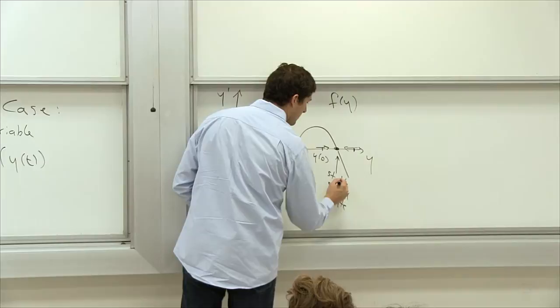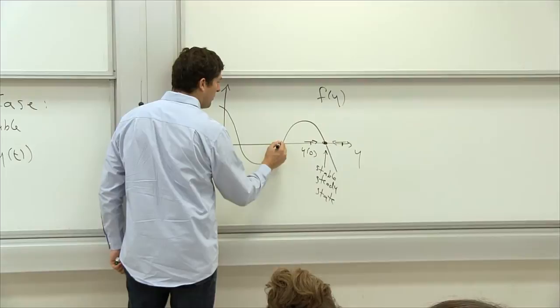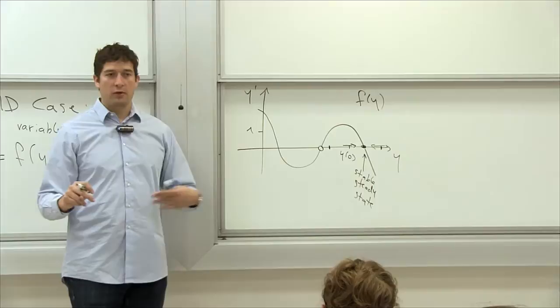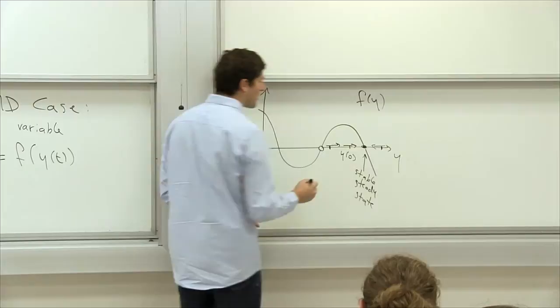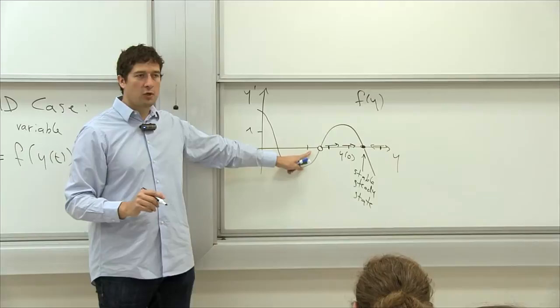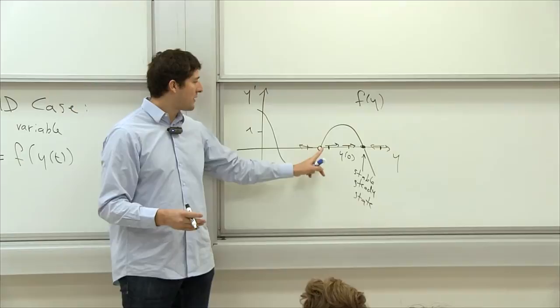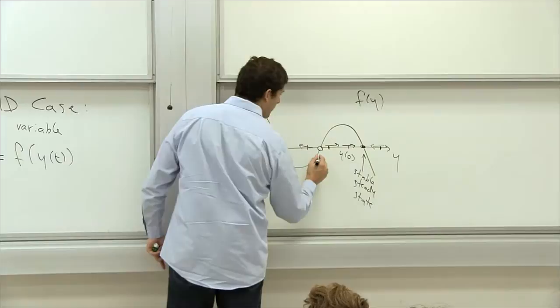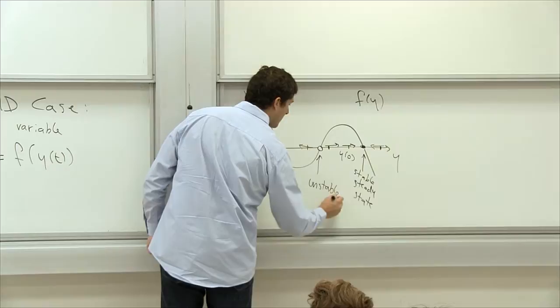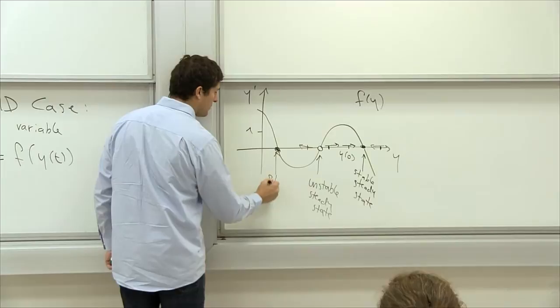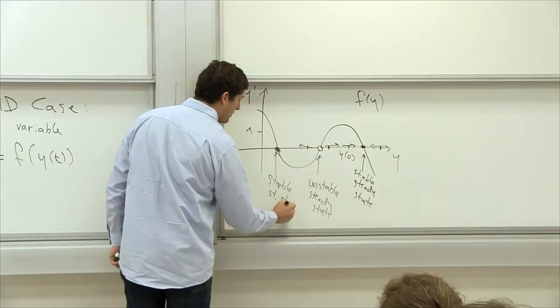Now let's think about another point where f equals zero — I'll draw it with an empty ball. If you start right there, you stay — it's a steady state too. But if you start slightly above, the population grows away; if you start slightly below, f is negative so it decreases away. This point is unstable — you blow away from it in either direction. So this is an unstable steady state. And this other point here is also stable.